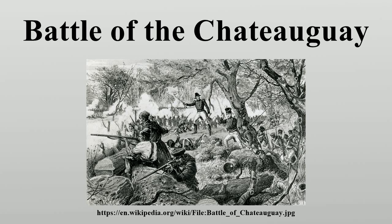On that day, two American sloops pursued British gunboats into the Richelieu River and were forced to surrender after the wind dropped and they were trapped by gunboats and artillery firing from the riverbanks. The British took over the sloops and used them in a raid against many settlements around Lake Champlain, capturing or destroying quantities of supplies in and around Plattsburgh. The American naval commander, Lieutenant Thomas McDonough, was unable to construct a flotilla of sloops and gunboats to counter the British vessels until August.